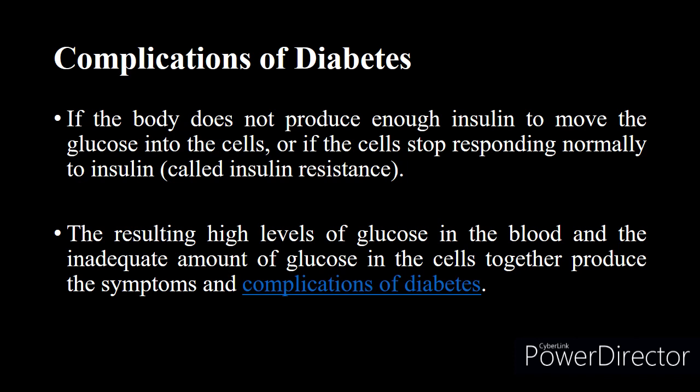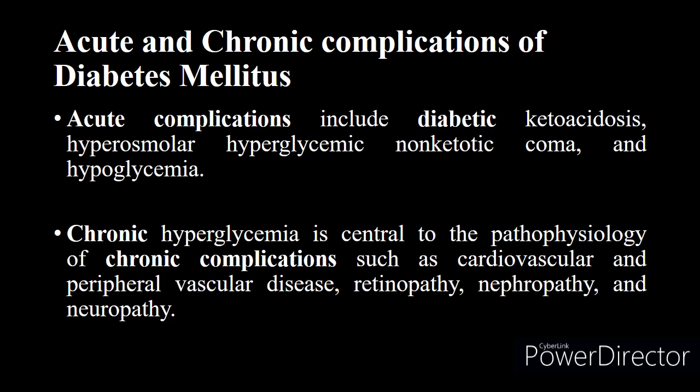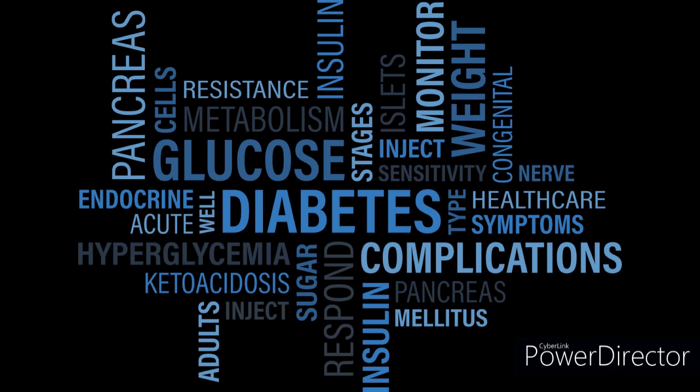The complications caused by this condition include acute complications such as diabetic ketoacidosis, hyperosmolar hyperglycemic non-ketotic coma, and hypoglycemia. Chronic hyperglycemia is central to the pathophysiology of chronic complications such as cardiovascular and peripheral vascular disease, retinopathy, nephropathy, and neuropathy. Let us take these diseases one by one.